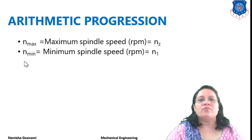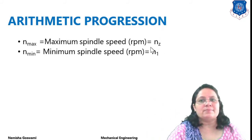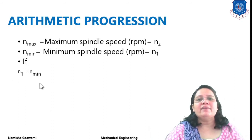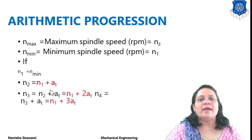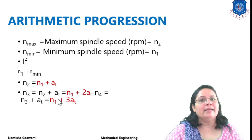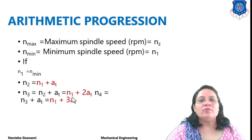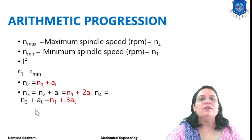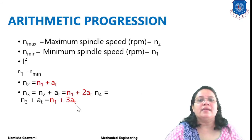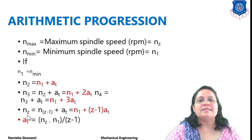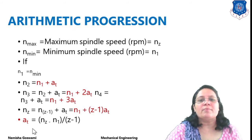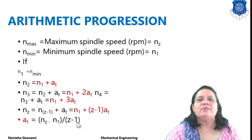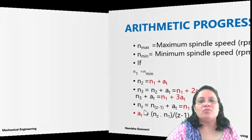For Arithmetic Progression: n1 is minimum speed (nz is maximum speed). Then n2 = n1 + Δ, n3 = n1 + 2Δ, n4 = n1 + 3Δ, and so on. Therefore nz = n1 + (z−1)·Δ. The common difference Δ is equal to (nz − n1) divided by (z − 1). Using this standard formula you can find the common difference.